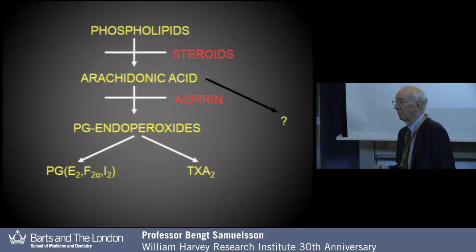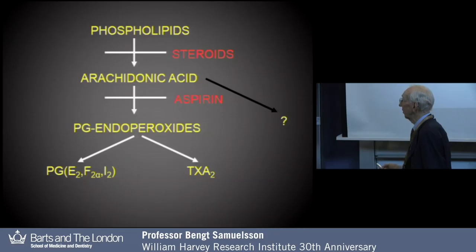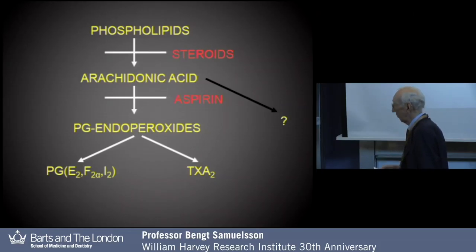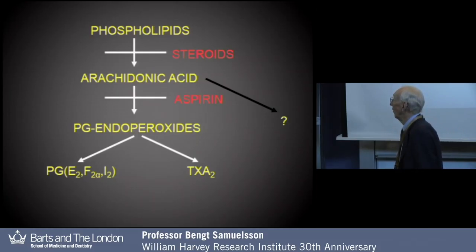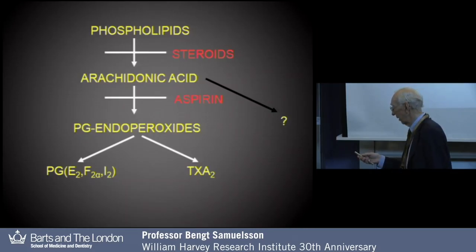At the time of the conference in Florence in 1975, there was a lot of discussion on the release of arachidonic acid. It was considered that steroids inhibit the release of arachidonic acid, and aspirin, of course, inhibits the formation of the endoperoxide. I did a very simple reasoning: there is a difference between the effects of steroids and aspirin, and maybe there are other compounds formed from arachidonic acid that could contribute to this difference.